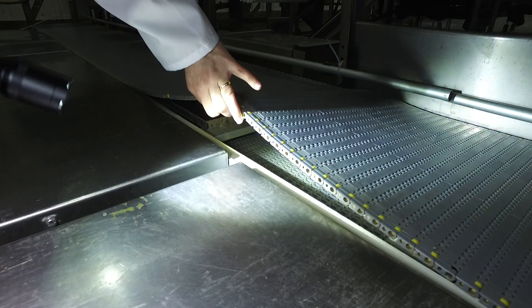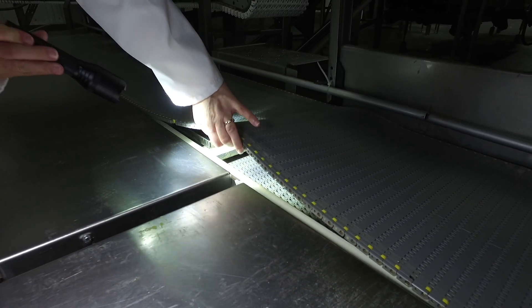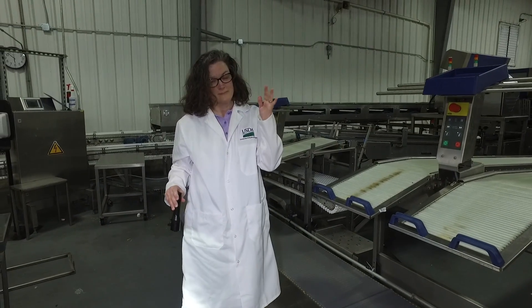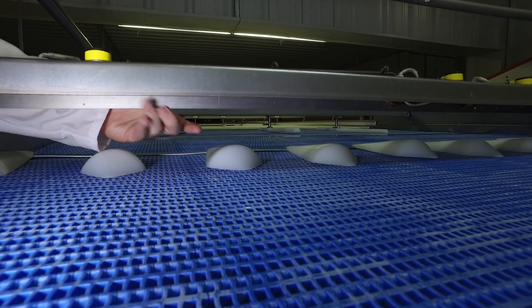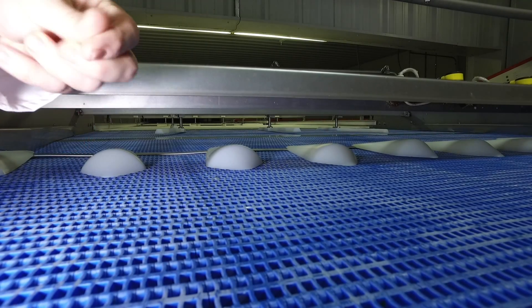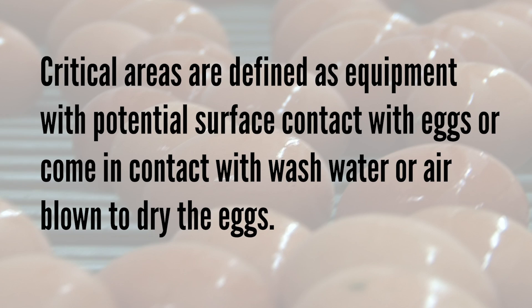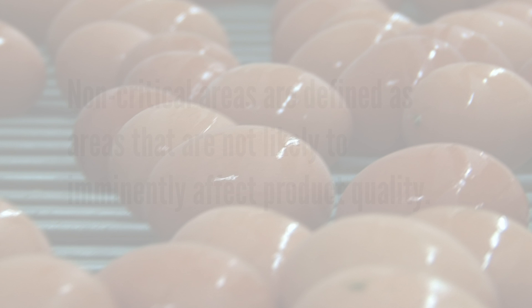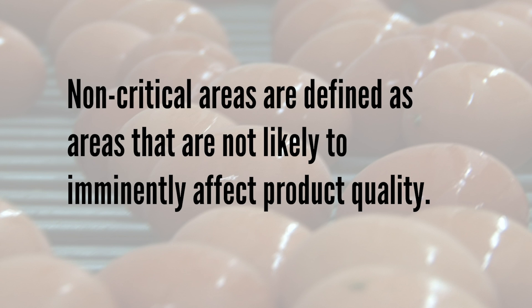So what is organoleptic inspection? Organoleptic inspection assessments include sight, smell, and touch. However, microbial growth will not always be seen, smelled, or felt. Critical areas are defined as equipment with potential surface contact with eggs or that come in contact with wash water or air blown to dry the eggs. Non-critical areas are defined as areas that are not likely to imminently affect product quality.